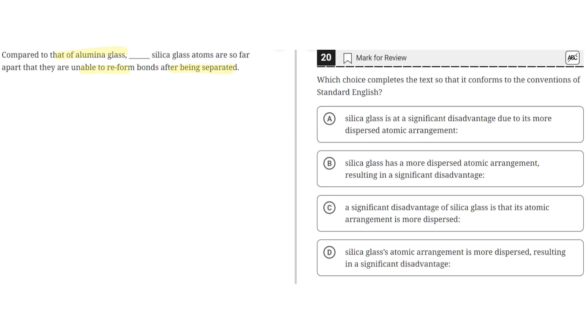Option A says, silica glass is at a significant disadvantage due to its more dispersed atomic arrangement. This is incorrect because this implies the subject or noun is silica glass, but instead it's silica glass's atomic arrangement. So A is incorrect.